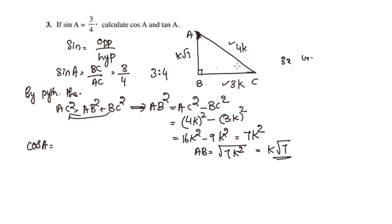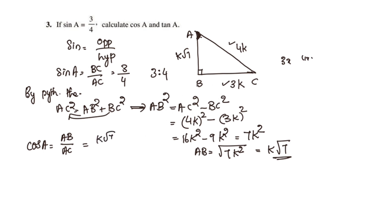Now for tan: opposite by adjacent. Tan A equals AB by AC — that is K root 7 by 4K. K and K cancel, giving root 7 by 4.